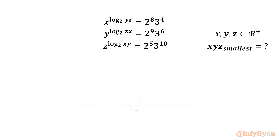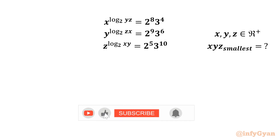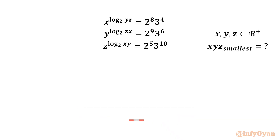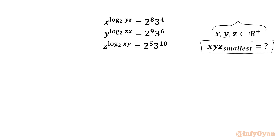Welcome to InfiJarn. Today in this video, we have one very interesting and challenging question from HMMT 2025. Here we have to evaluate the smallest possible value of X, Y, Z, given that X, Y, Z belongs to positive real numbers and we have three known equations.